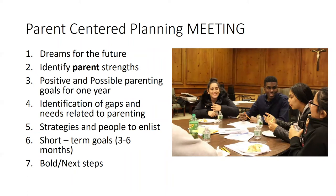This is followed by the development of short-term goals — goals the parent could make in the next three to six months. Finally, the meeting ends with bold steps and next steps: the one bold step the parent can make in the next two weeks toward their positive and possible parenting goals, and what the next steps afterwards are. This parent-centered planning meeting can last a few hours, with the facilitator recording all information on a poster board hung on a wall so everyone can reference it.